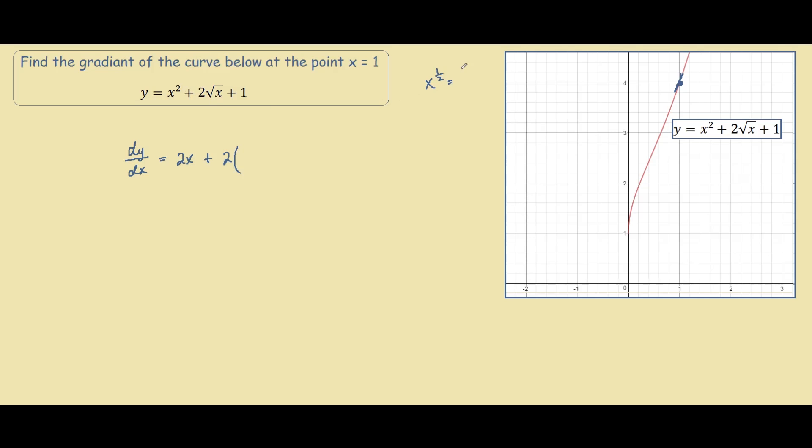Using our derivative rule, bring the 1/2 to the front times x to the power of -1/2. So we have 1/(2√x), and the derivative of 1 is 0, so we ignore that.